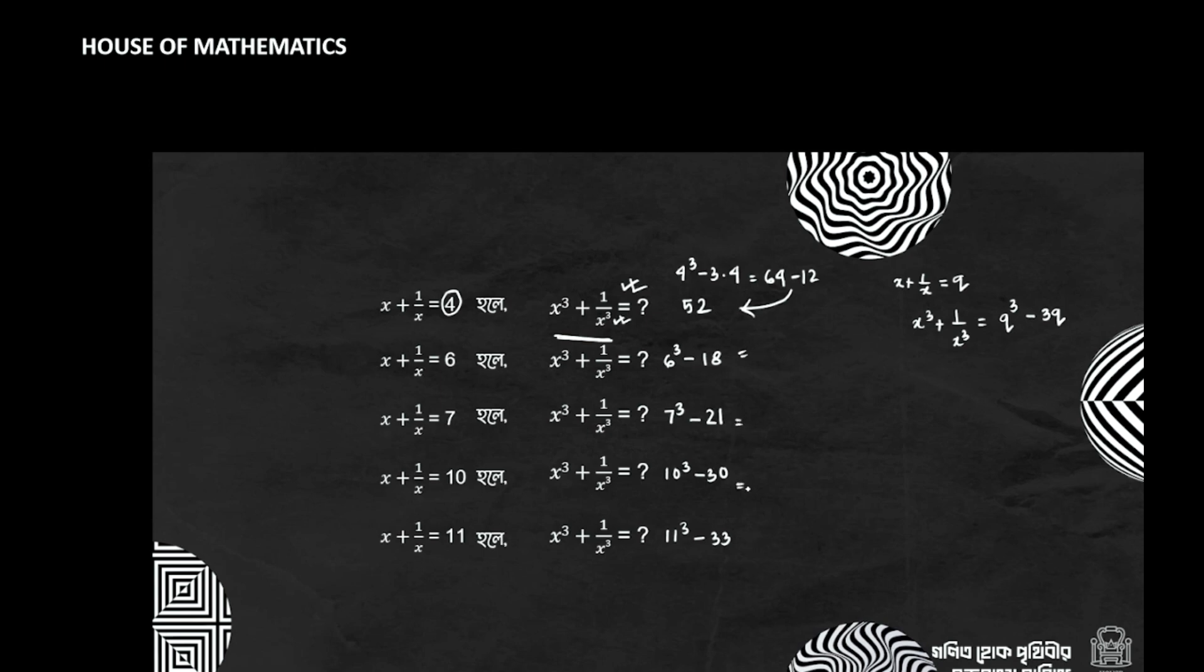We have written a formula, so we can see how the formula is. We have seen a plus b whole cube formula. We have seen a cube plus b cube equals a plus b whole cube minus 3ab times a plus b.